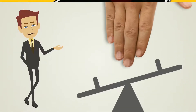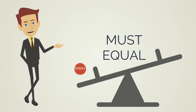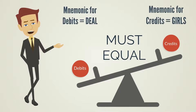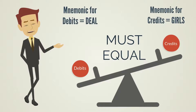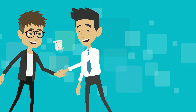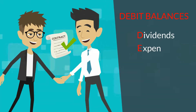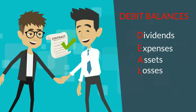Debits must always equal credits. There are general guidelines where accounts tend to have either a debit balance or credit balance. The mnemonic DEAL is one way to remember the debit balance accounts: Dividends, Expenses, Assets, and Losses.